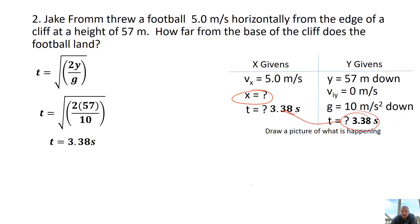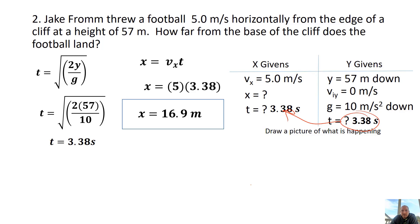That time also goes into the x-axis equation. Now we use x equals vx times t. Plugging in our values — we have our vx, we have our t — I get 16.9 meters. On E-class, you'd enter 16.9 as the number and meters as the unit.